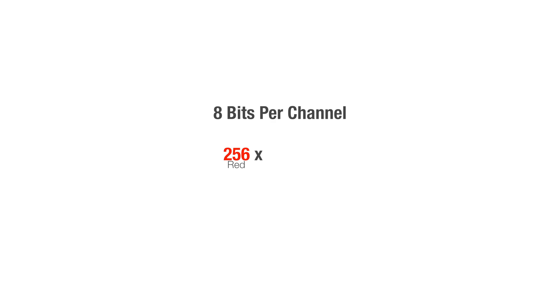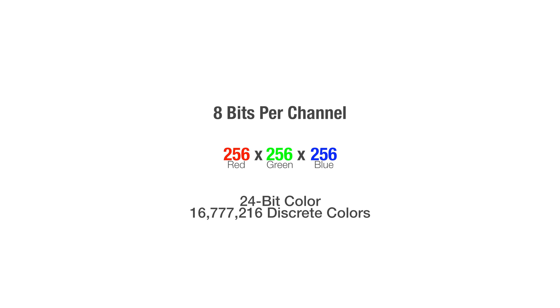Each RGB channel has a total of 256 luminosity levels or color shades. 8-bit video or photos have 256 by 256 by 256 luminosity levels, which equate to more than 16 million discrete colors. A 10-bit image will have 1024 red, 1024 green, and 1024 blue luminosity levels.